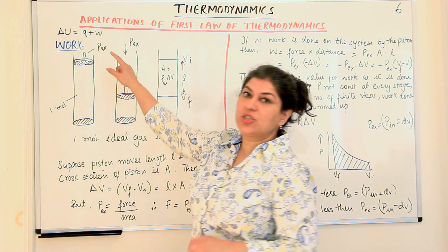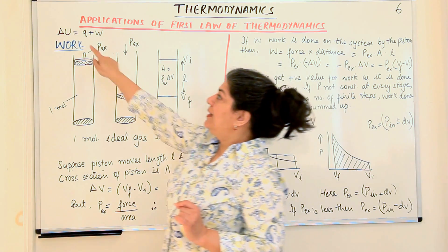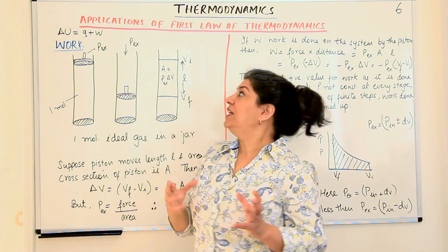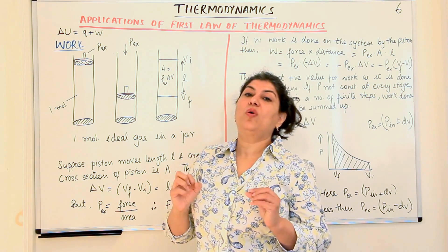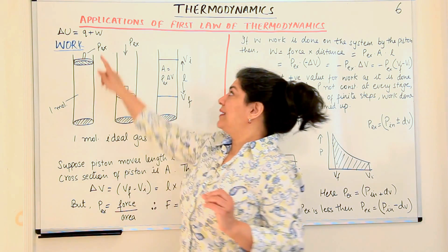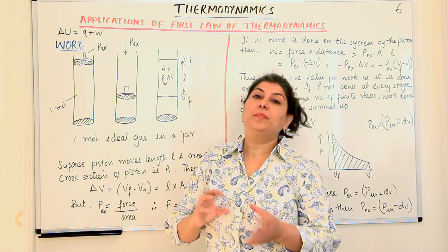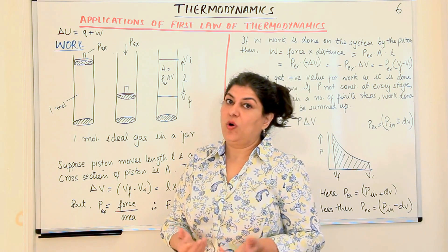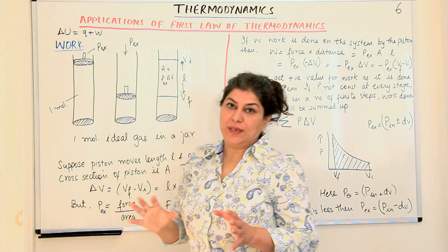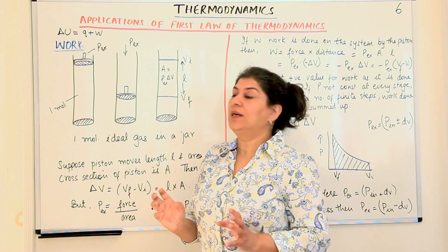The equation for the first law of thermodynamics is that delta U, that is the change in internal energy, is equal to the sum of the change in heat, that is Q, and the work done by the system or on the system. Let us take these one by one and try to understand work better.